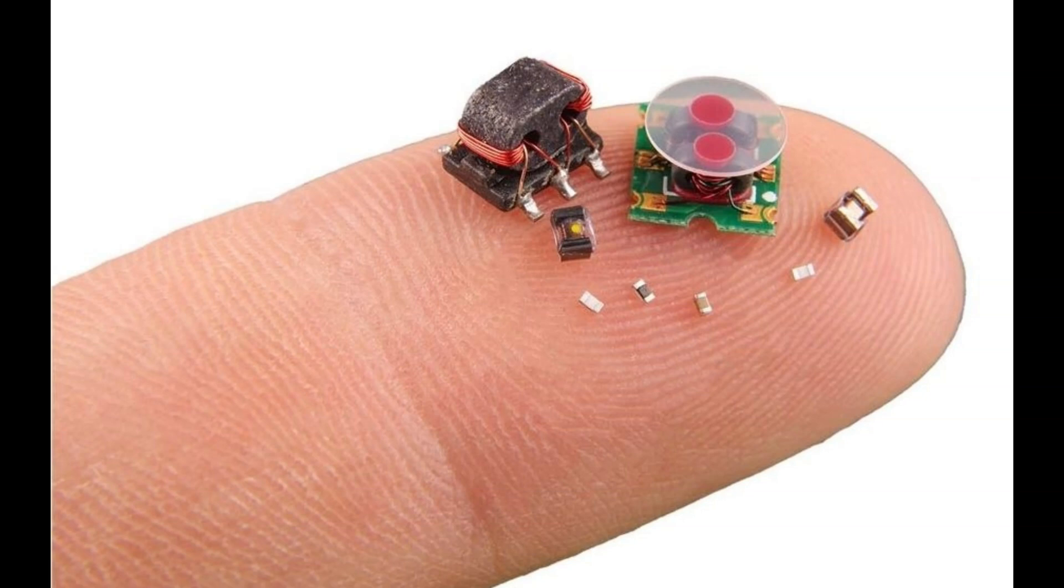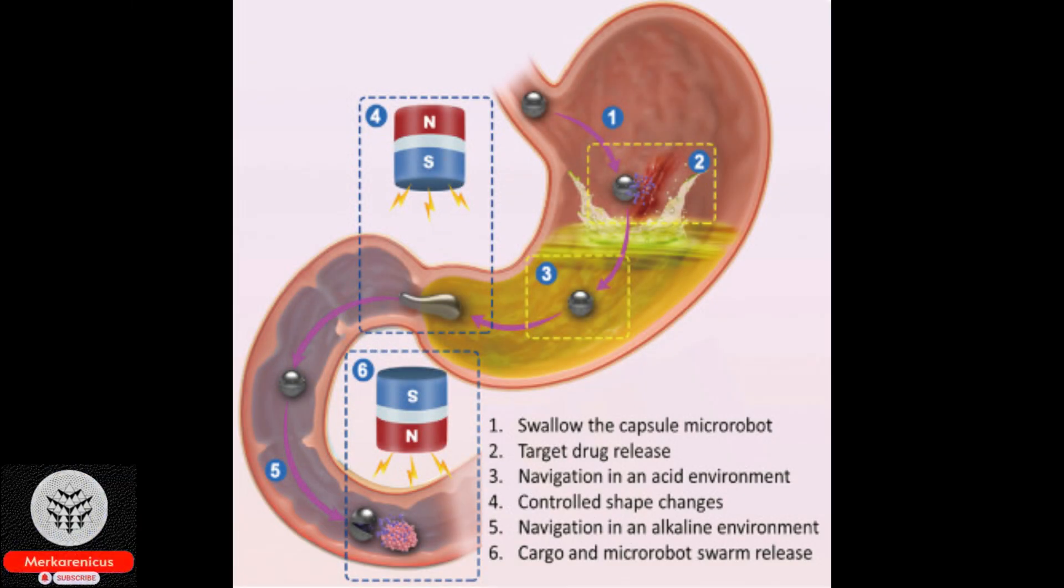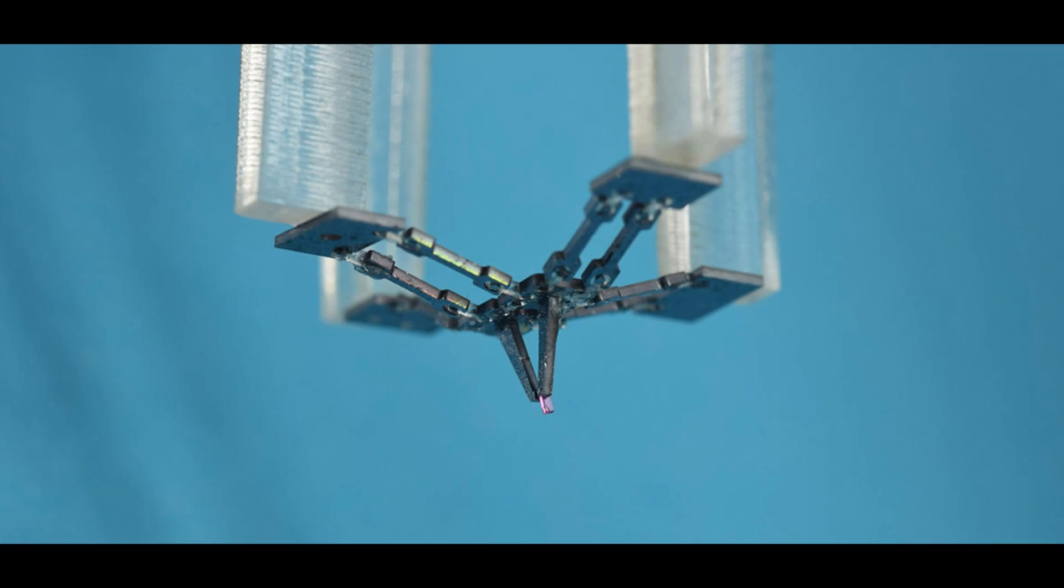The issue of plastic pollution is further complicated by the presence of microplastics, which are smaller than five millimeters in size. These tiny particles pose a threat to animals as they can be consumed, potentially causing harm and entering the human food chain.